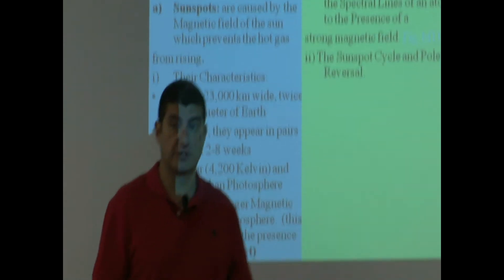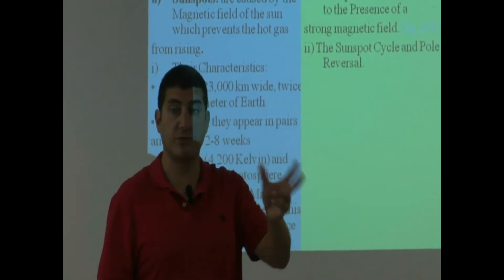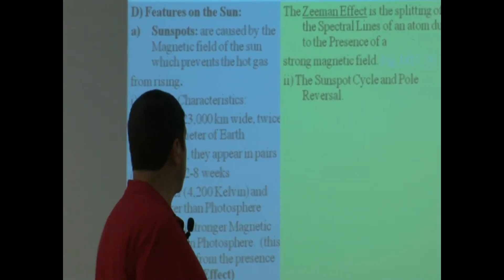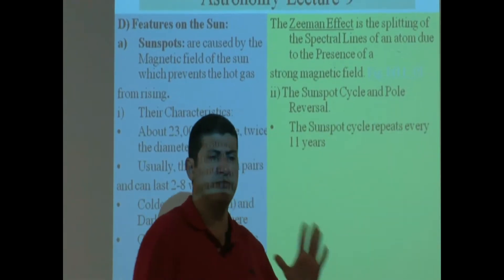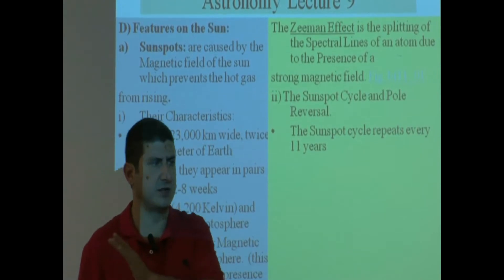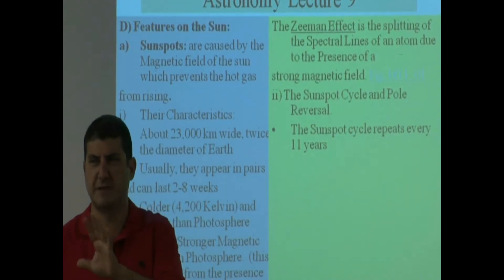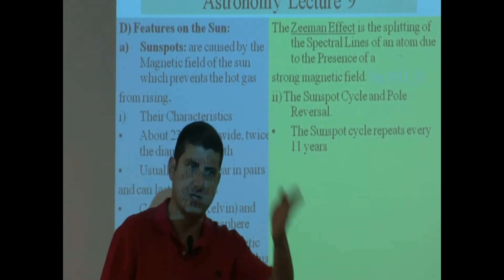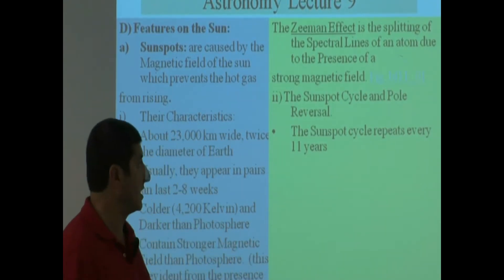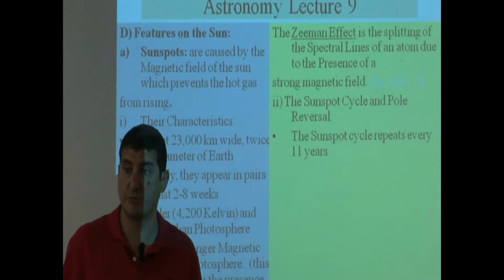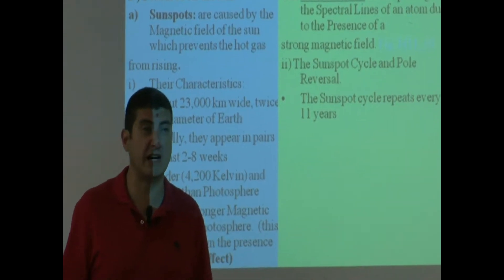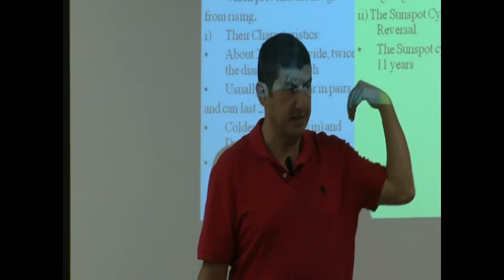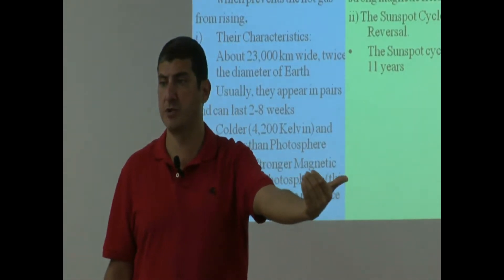The sunspot cycle and pole reversal — this is some really interesting, very weird phenomenon. Ever since we've been observing sunspots very regularly, from the beginning of the 1600s or the 17th century, we've observed sunspots because that's when the first telescopes were made. It was around 1605 when Galileo took his telescope and pointed it to the sun, and then we were able to start observing sunspots.